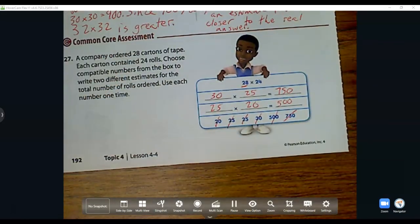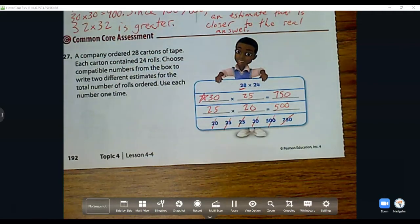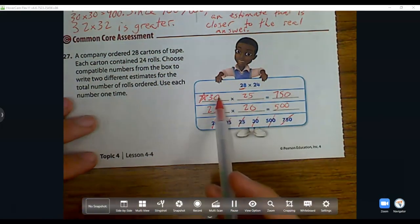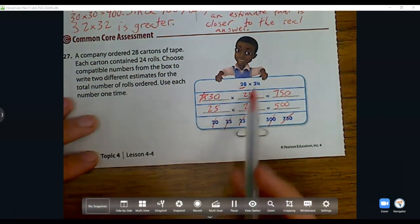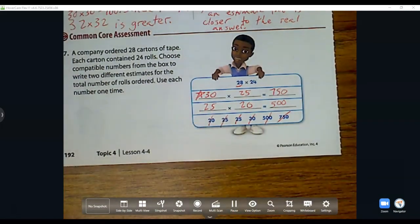Which one do you think is the closer answer? If you said this one would be closer to our real answer, you are correct because we didn't do as many changes. We only changed this by 2 and this by 1, whereas here we changed it by 3 and 4. So remember, the less amount we change it, the closer it will be to our actual answer. All right guys, good job. I will see you guys later.